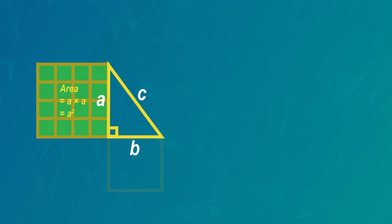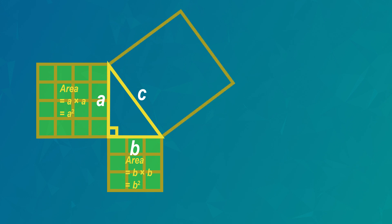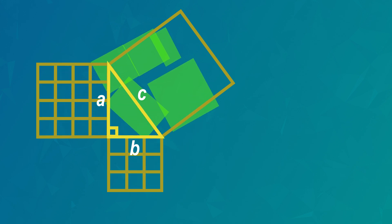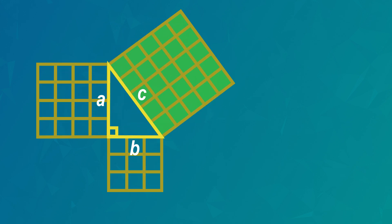Now we draw a square on the side marked B. The area of this square is B multiplied by B, or B squared. Last, we draw a square on the longest side marked C. The area of this square is C multiplied by C, or C squared. Now look at this — the area of the large square equals the areas of the two smaller squares. So C squared equals A squared plus B squared.